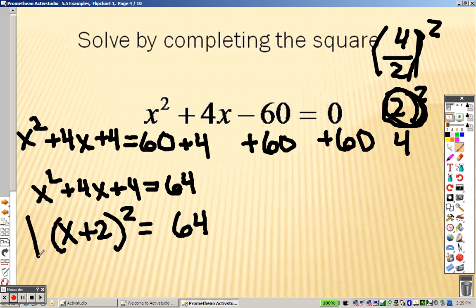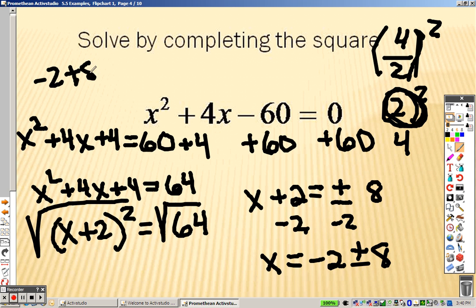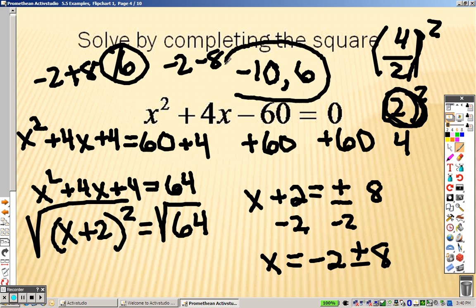So I can square root both sides. So I get x plus 2 equals plus or minus, because I square rooted, and the square root of 64 is 8. So plus 2 means I'm going to subtract 2 to get x by itself. So I get x equals negative 2 plus or minus 8. So my answers are negative 2 plus 8, which is 6, and negative 2 minus 8, which is negative 10. So I get negative 10 and positive 6 are my answers to that problem.